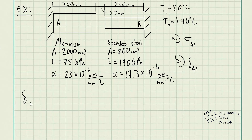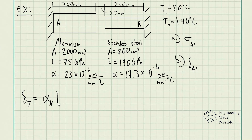First, let's use the equation for deformation due to thermal expansion. We are going to consider the thermal expansion of both rods and compare the total to the gap to see if they make contact and whether a reaction force is produced. The thermal expansion of the aluminum rod is: coefficient times original length times the temperature difference. Then we add the thermal expansion of the stainless steel rod: its coefficient times its length times the same temperature difference.